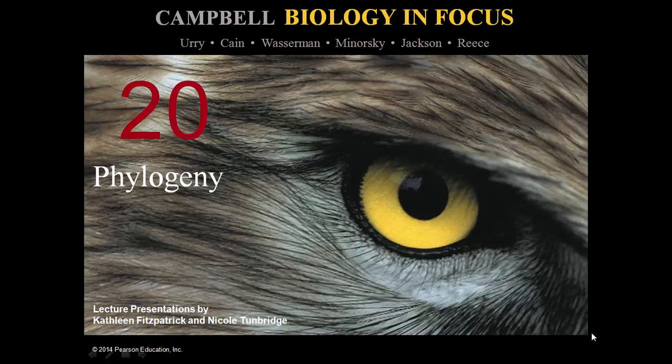Welcome to lecture number two of Bio 102, Principles of General Biology at John Tyler Community College. My name is Mr. Sparks and I will be your instructor for this lecture. Today we're going to study chapter 20, Phylogeny. Phylogeny is our understanding of the relationship of species and organisms to one another and throughout their evolutionary history.